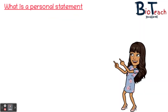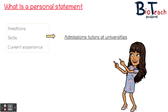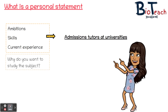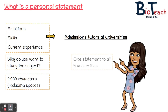We should begin by answering what a personal statement actually is. It's a super important part of your UCAS application where you get a chance to describe your ambitions, skills and current experience to the admissions team at the universities you're applying to. It's your chance to say why you want to study that subject. It's usually about a page long with around a 4,000 character limit including spaces. You're telling the admissions team why you're suitable, and you only submit one statement for all five university applications, so you shouldn't mention any of the establishments by name.